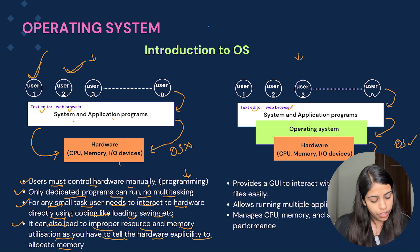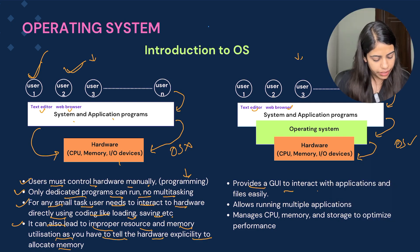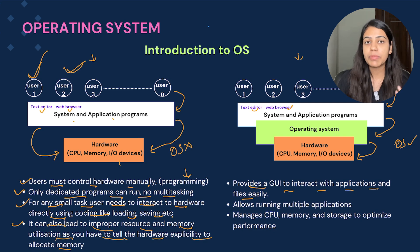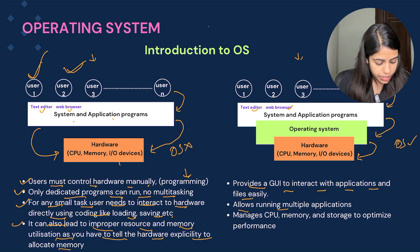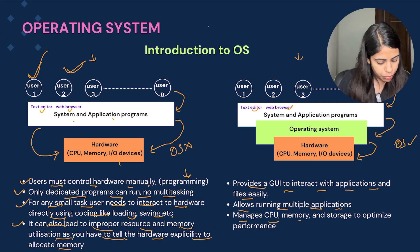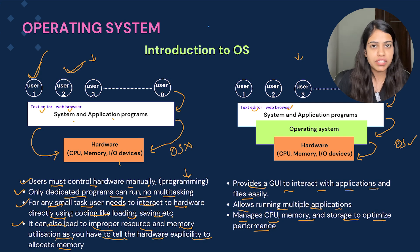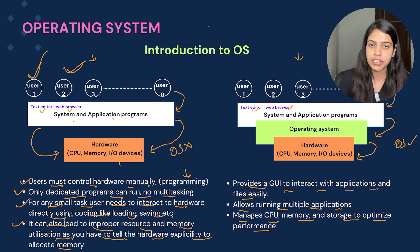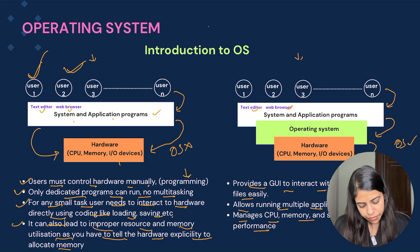Once we have an operating system, it provides a graphical user interface to interact with applications and files easily. It allows running multiple applications simultaneously through multitasking. It manages CPU, memory, and storage to optimize performance — all resource and memory allocation is handled by the operating system, so the user doesn't need to manually give instructions to the hardware.